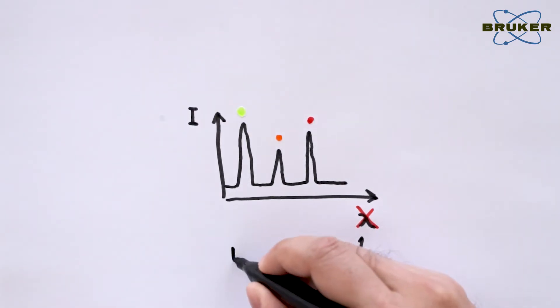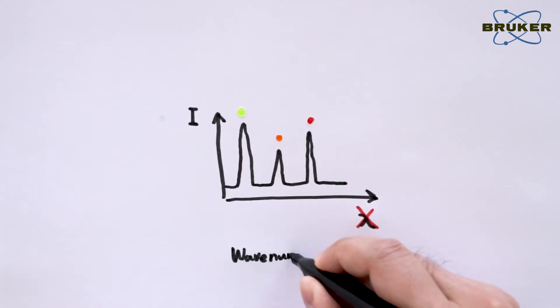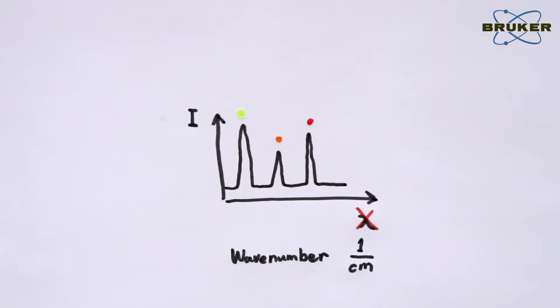Instead, we use inverse centimeter, which is also called wavenumber. Basically, this is a very simple Raman spectrum.